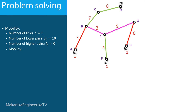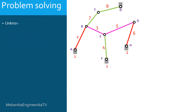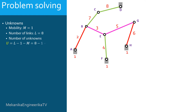Hence mobility M is equal to 1. In order to determine the number of unknowns, we need to know the mobility and the number of links. We have just calculated mobility and it is equal to 1. The number of links is 8: 7 bars and the ground. Then the number of unknowns will be given by L, the number of links, minus 1, minus M, the mobility. Hence, the number of unknowns is 8 minus 1 minus 1. We have 6 unknowns.